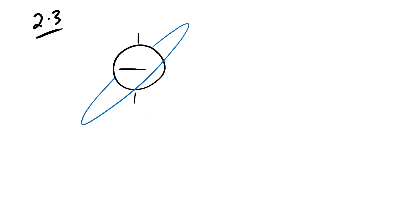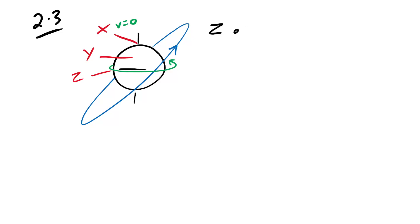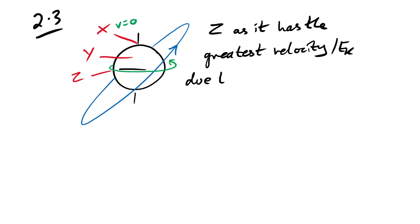Question 2.3: we have launch sites X, Y, and Z — which would require less fuel? Some people think Z is better because it's closer to the orbit, but actually it's all about which site is already moving fastest. At the poles the speed is zero, but at the equator the site is already moving in the right direction. So Z is the best choice as it has the greatest velocity — and therefore greatest kinetic energy — due to Earth's rotation.